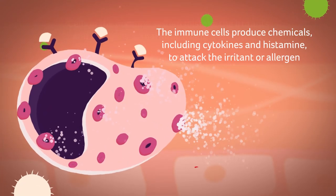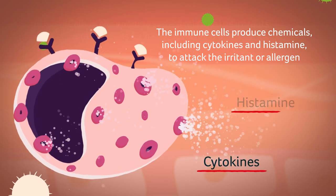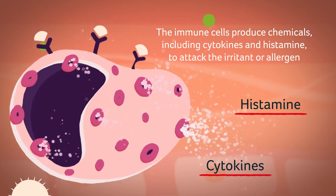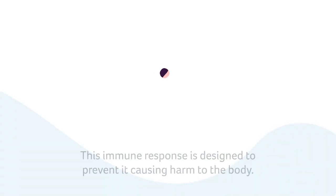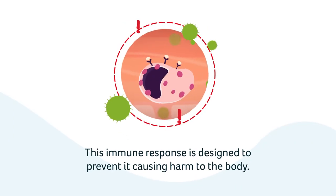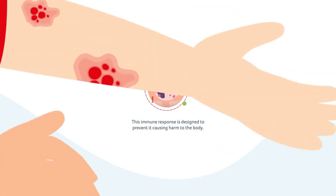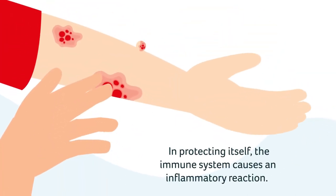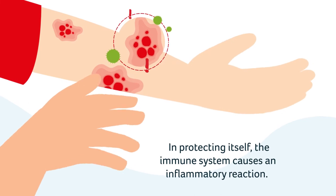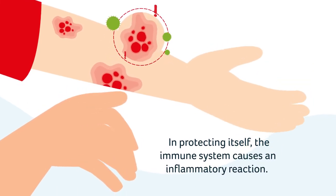This causes the immune cells to overreact and mount an attack. The immune cells in the blood then produce lots of chemicals including cytokines and histamines to attack the irritant or allergen. This immune response is designed to prevent it causing harm to the body. However, in protecting itself, the immune system causes an inflammatory reaction which in eczema results in the familiar redness, swelling, itch, and rash response.